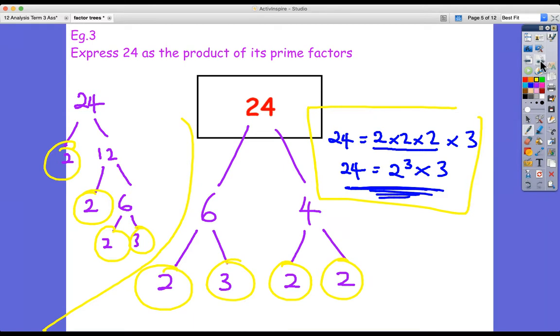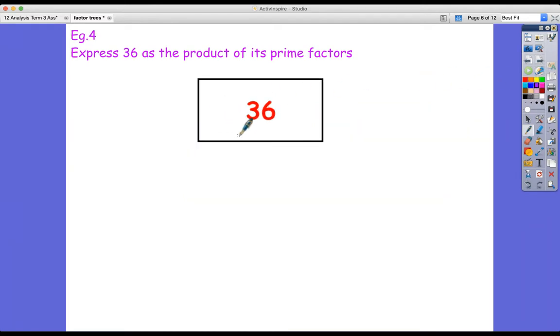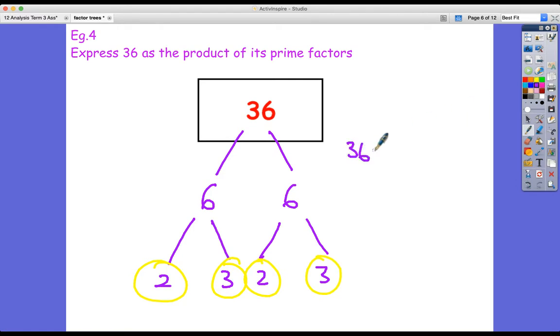Let's do another one. 36 this time, split it up into its factors, a pair of factors first. Well, a nice obvious one is six and six. Are any of those prime? No. So we continue. What do we split them up into? Two and three, two and three, perhaps? Are they prime? Yes, they are. So we've got our answer. So we can now say that 36 equals two times two times three times three. Remember, I could have written two times three times two times three. I've just written them in numerical order. It doesn't matter. So what we've got here are two times two is two squared, and three times three is three squared.